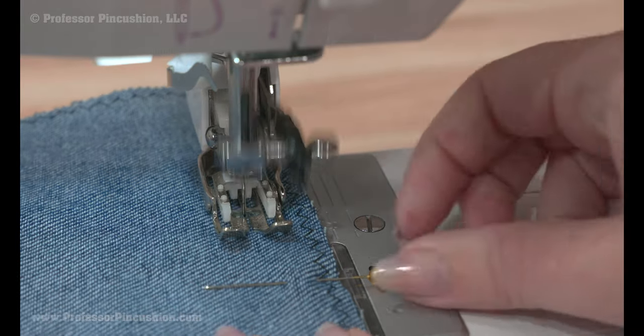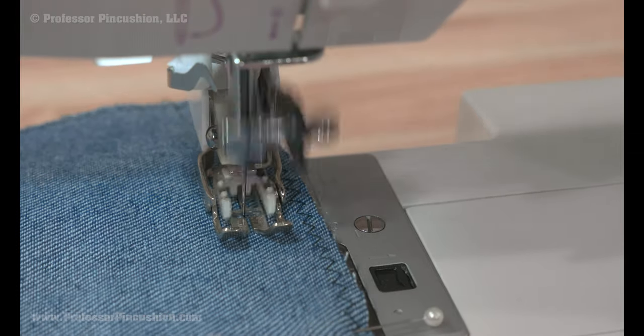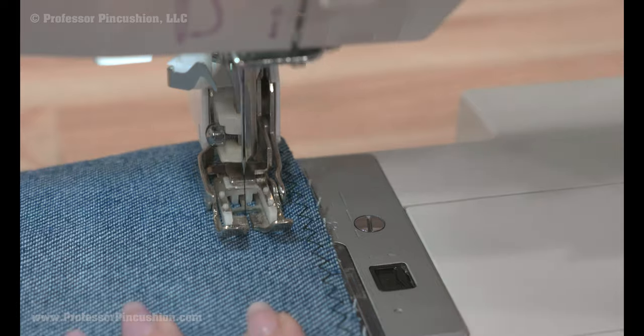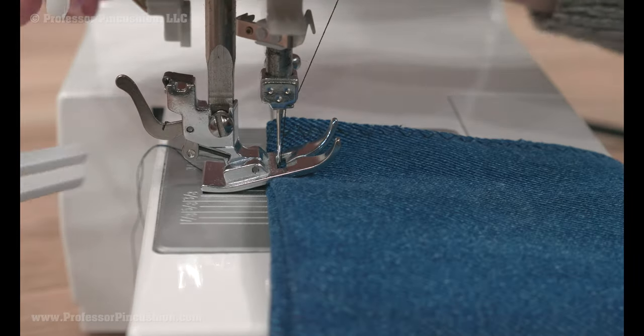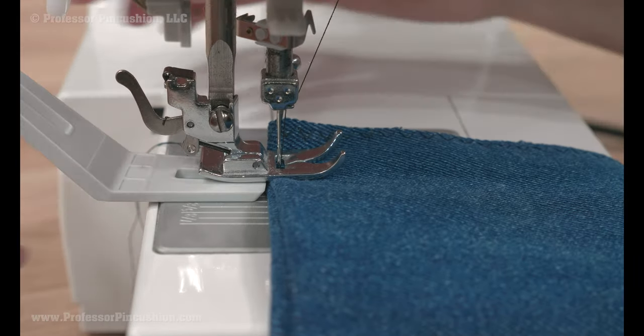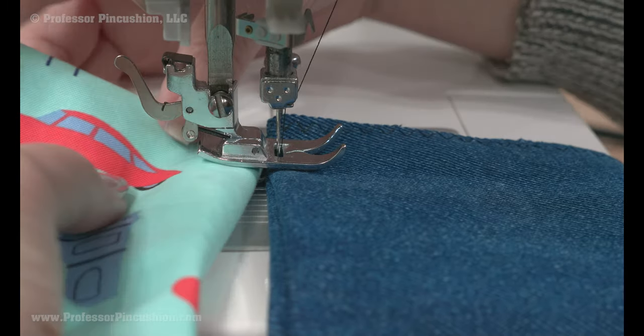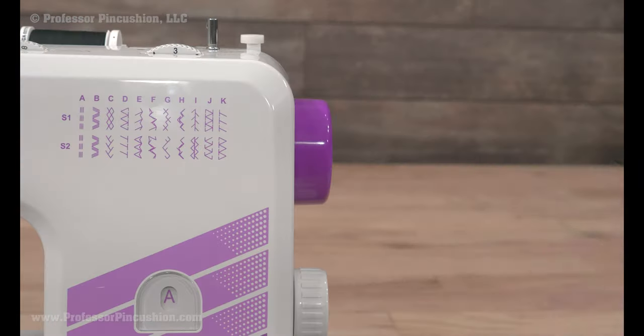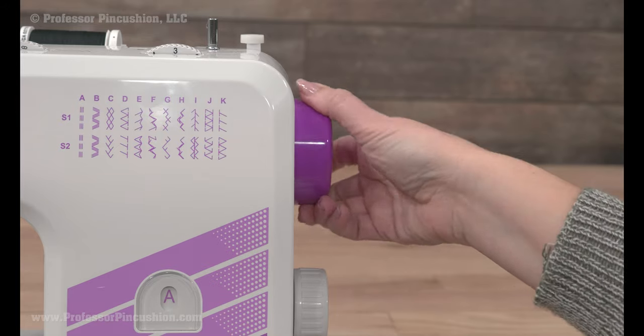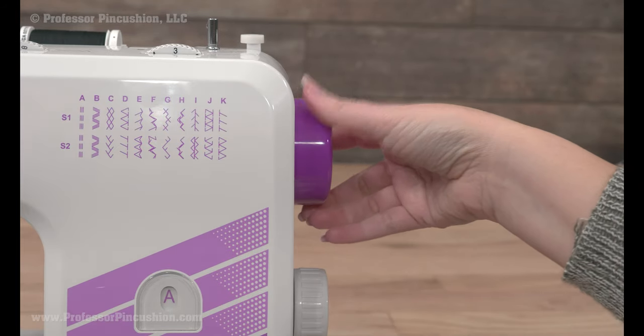When sewing, you can use a regular presser foot, but consider using a walking foot to get over thick or difficult areas. To get over humps, you can use a leveler to level out the presser foot or place a stack of fabric under the foot and behind the needle. Also, sew slow through difficult areas, turning the handwheel manually if necessary.